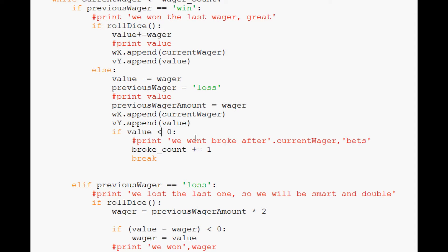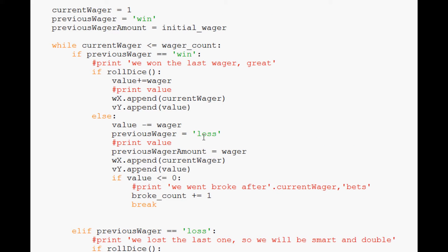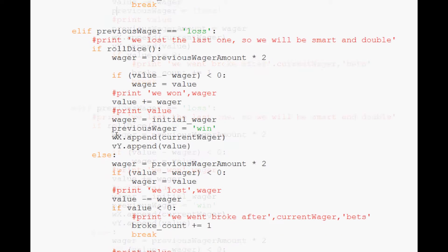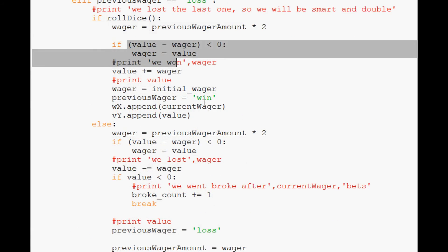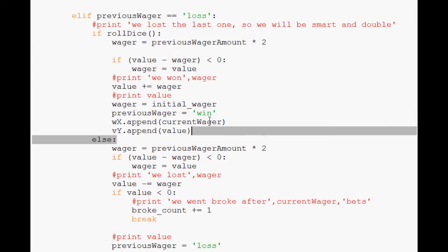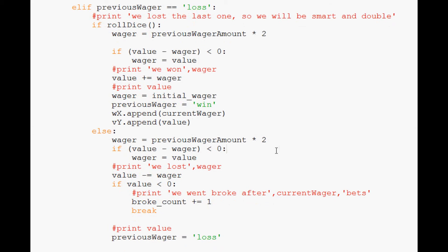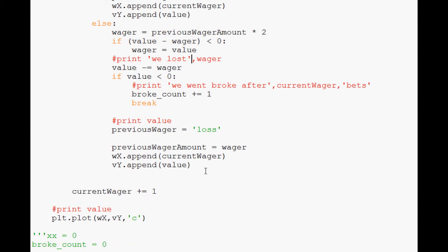Now what we'll do is up here where it says zero, we'll say if value is less than or equal to zero, we do this. And then what we're going to do is, let me think here. So if value down here, I think we're all set. Elif previous wager is a loss.